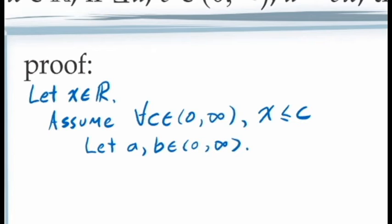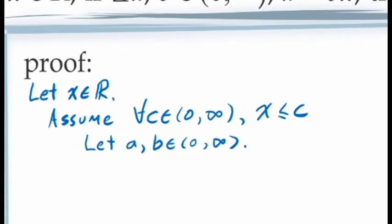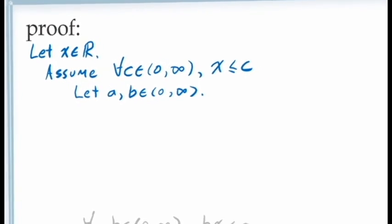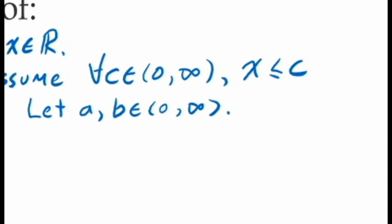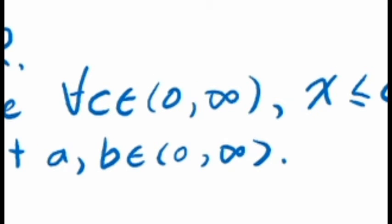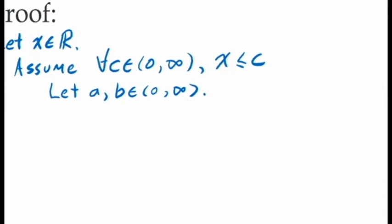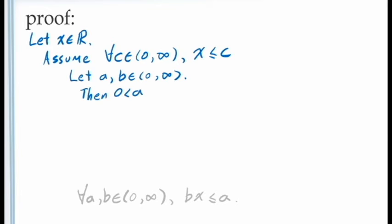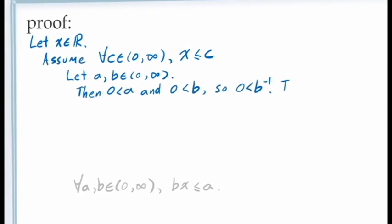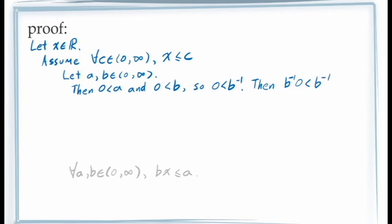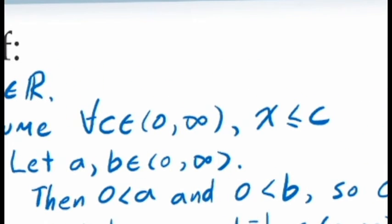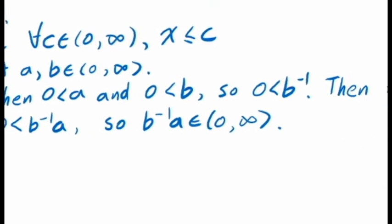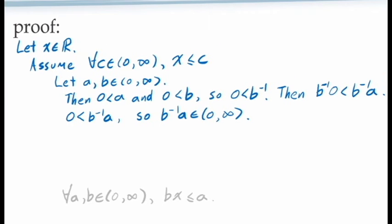Borrowing an idea from our direct proof, we might choose to talk about the value c equal to a times b inverse. If we can show that ab⁻¹ is in the interval from 0 to infinity, then we know it's one of the values of c we can use. Since a and b are individually in the interval from 0 to infinity, both a and b are greater than 0, meaning b inverse is also greater than 0. Multiplying both sides of a is greater than 0 by b inverse gives us ab⁻¹ is greater than 0, so ab⁻¹ is in the interval from 0 to infinity. Applying universal instantiation, since our assumption holds for all c in the interval from 0 to infinity, it must hold for ab⁻¹ — meaning x is less than or equal to ab⁻¹.